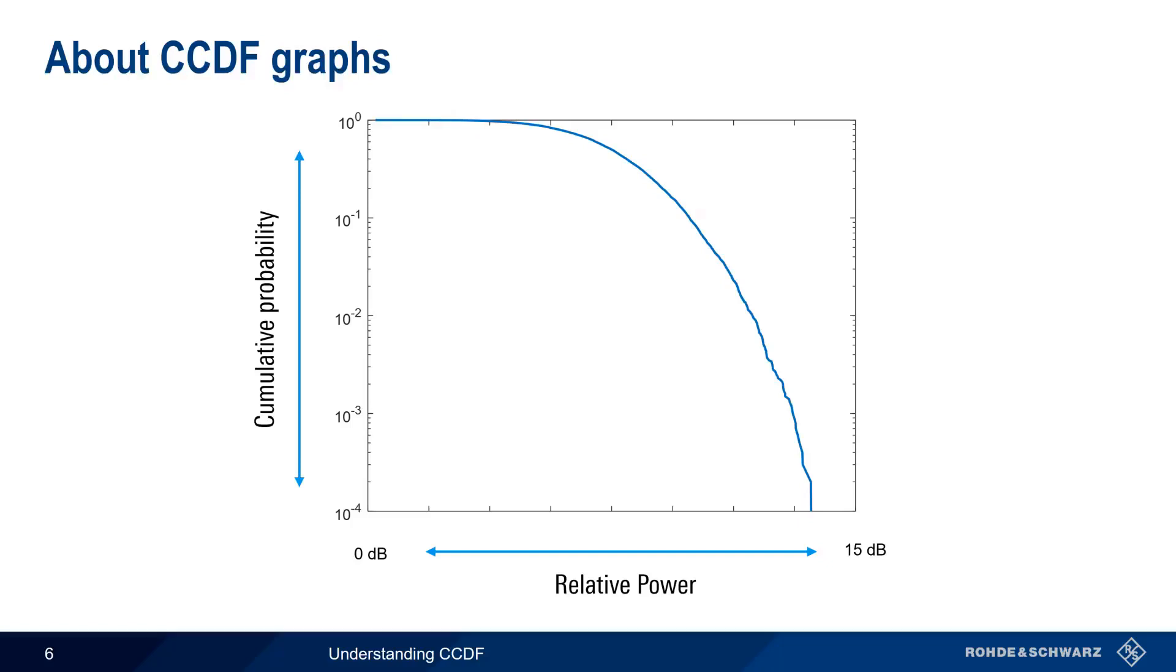Remember that a point on the CCDF graph shows the probability or the percent of time that a signal is at or above a certain level. In this relative graph, we see that 10% of the time the power is 11 dBm or more above the average level.